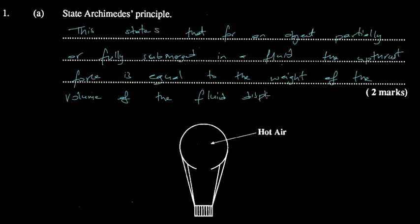What this simply means is that whenever we place an object in a fluid — for instance, in a container of water — we'll see right away that the water level rises because the object displaces some of that water. Archimedes' principle is saying that the upthrust, the upward force acting on the object, is equal to the weight of the water displaced by that object.